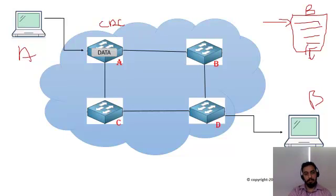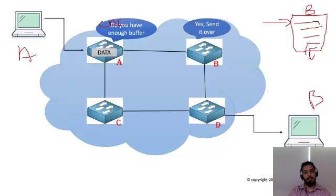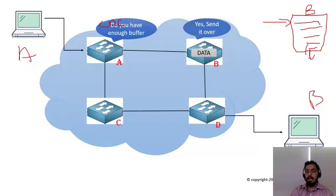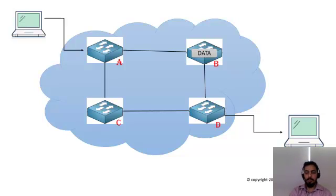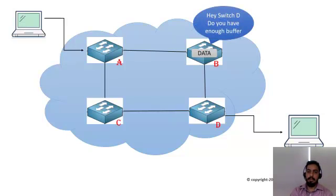To make sure the buffer at Device B is available, Switch A sends a request asking if Device B is ready to receive the data. Device B confirms it has enough buffer, so Device A sends the data to Switch B. The same process is followed at every device — Switch B checks the data against CRC and requests Device D to confirm if it has enough buffer to receive the data.